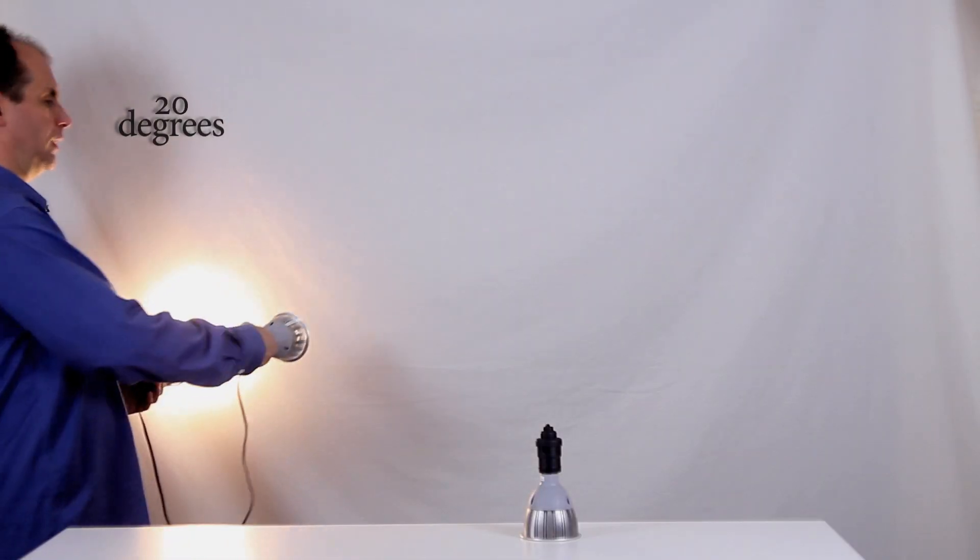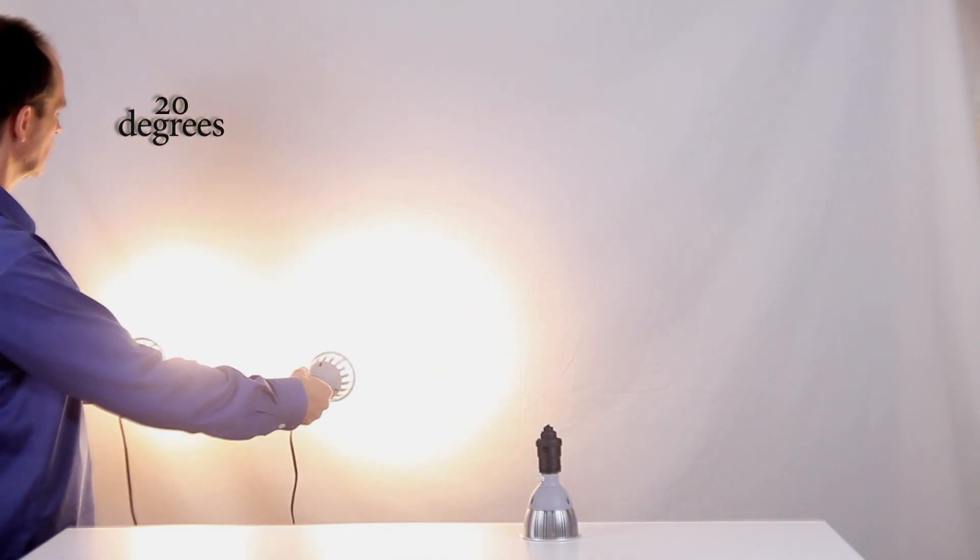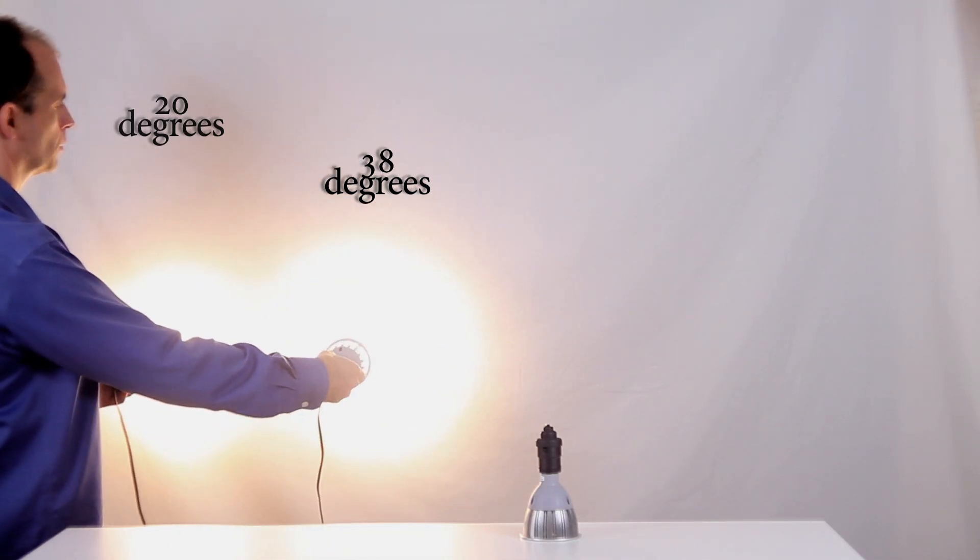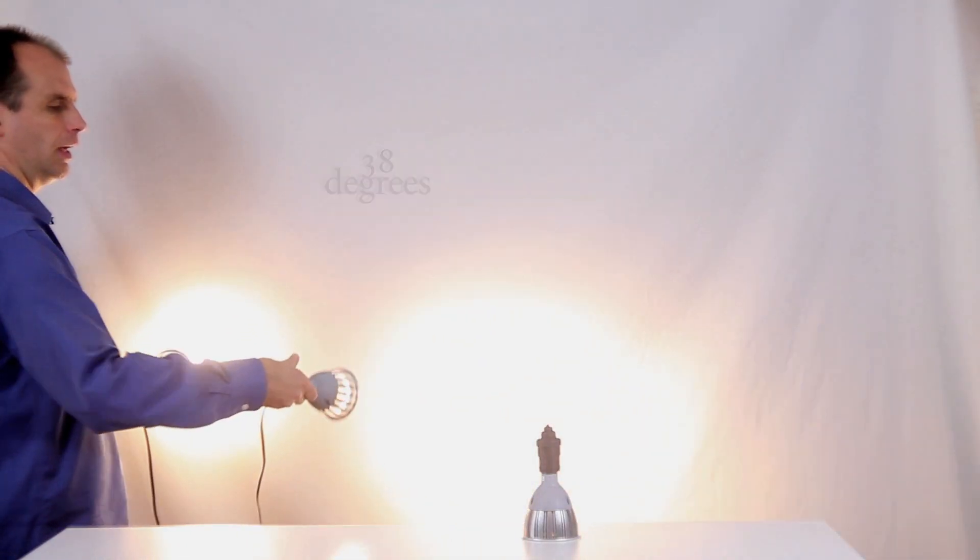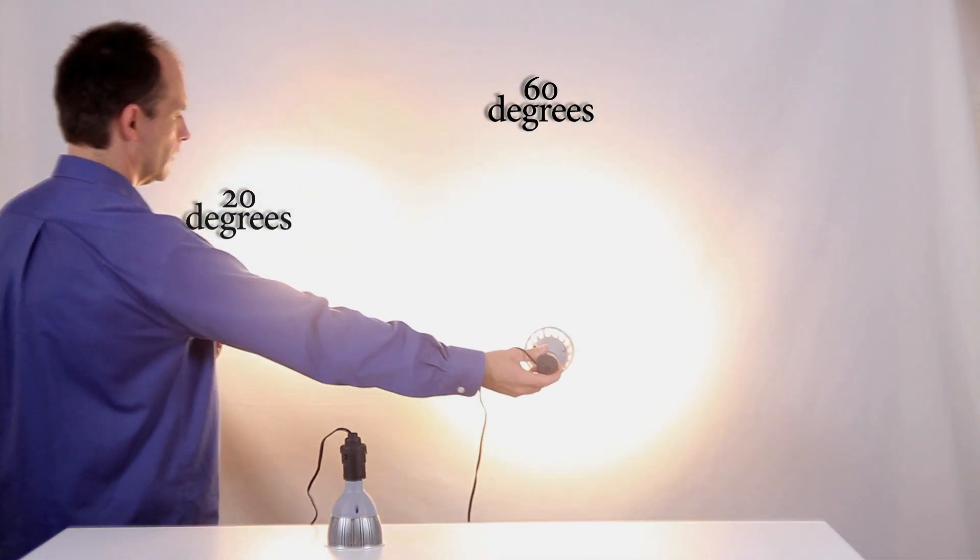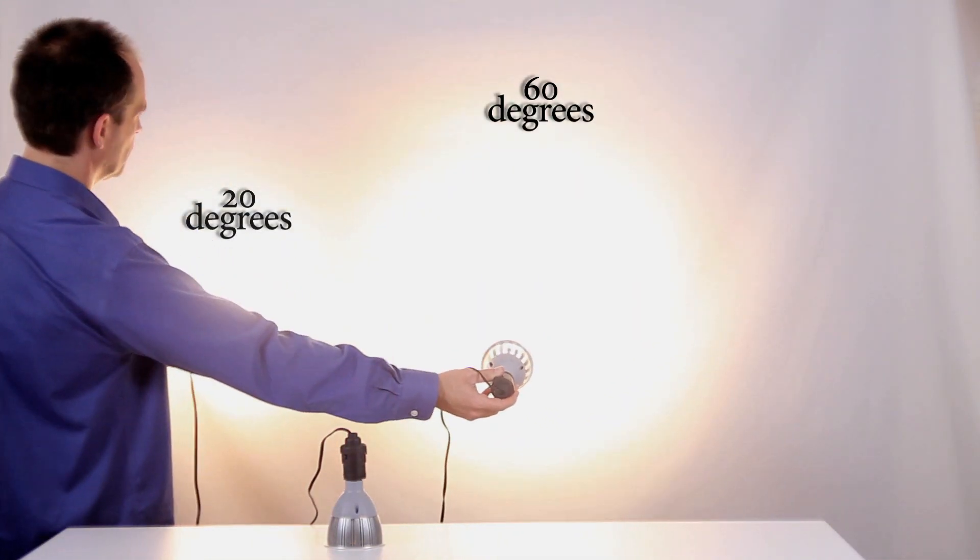A 20 degree lens is a spot, a pretty tight spot. This is 38 degrees, which is medium. And over here we have a 60 degree, which is wide. I'll try to put these things the same distance apart.